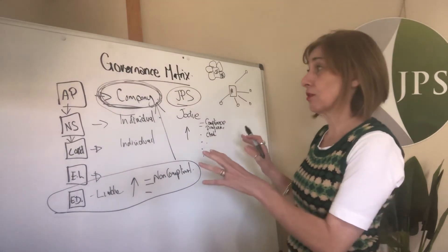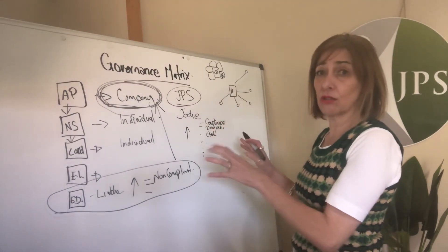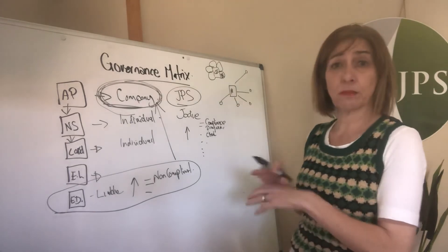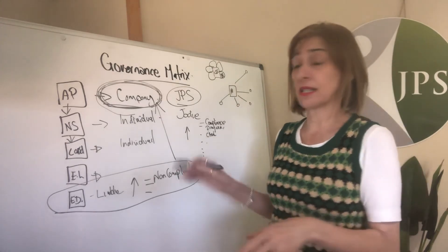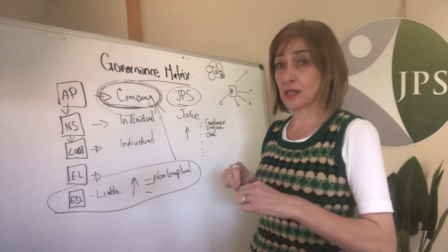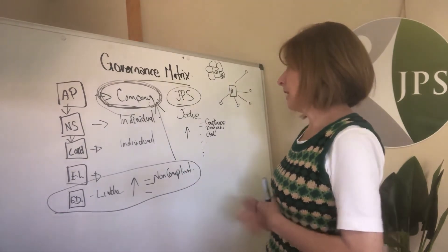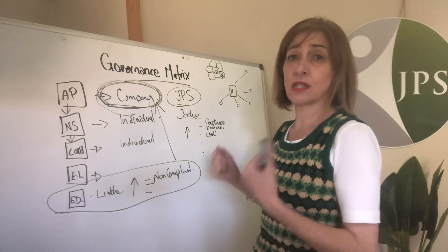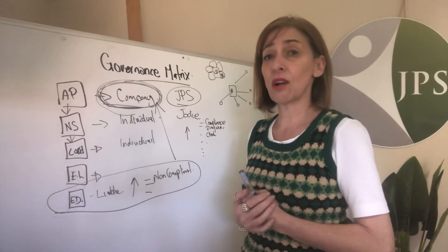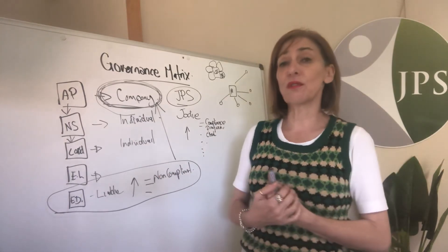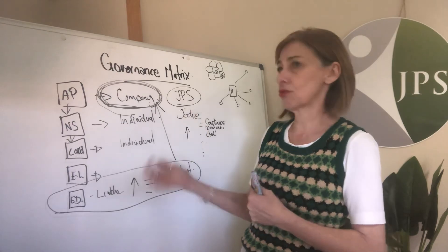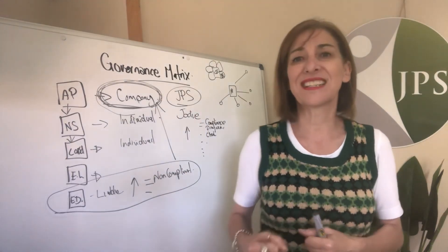I hope that clarifies what a governance matrix should look like and what things you should consider. If you've got any more questions, feel free — I've always got links below. Jump on board for your individual circumstances because it does change from service to service. Long daycare looks very different. Let me know how you're going — just a quick overview of what a governance matrix should consider. Talk soon, bye!